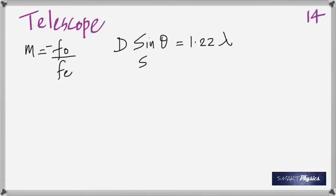Resolving power is the reciprocal of the limit of resolution. For the eye, the limit of resolution is one arcminute, so its resolving power is 1 per minute. From D sinθ = 1.22λ, you can calculate sinθ = 1.22λ/D, giving you the limit of resolution θ. Then resolving power = 1/θ, with θ in radians.